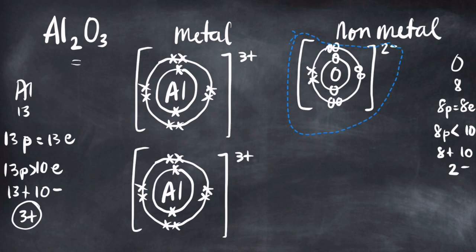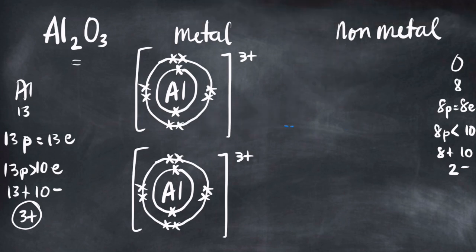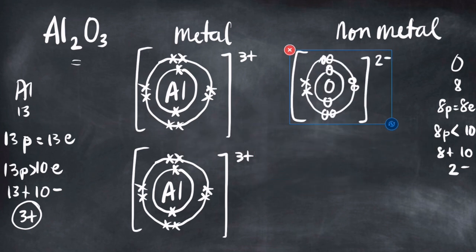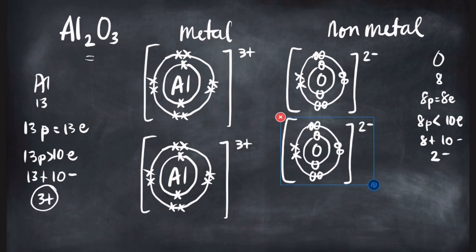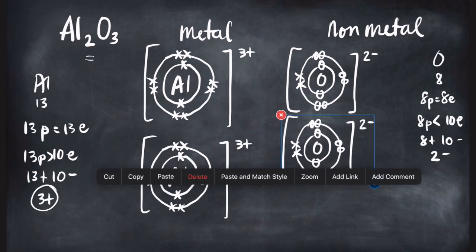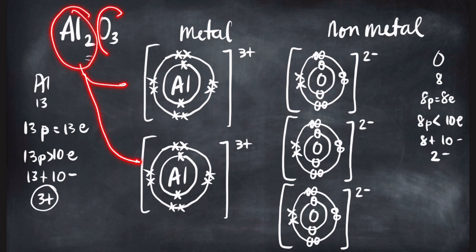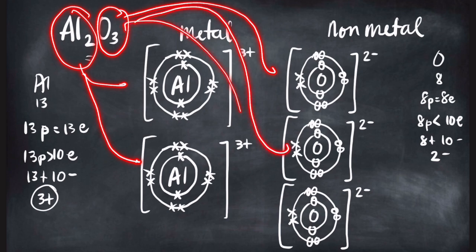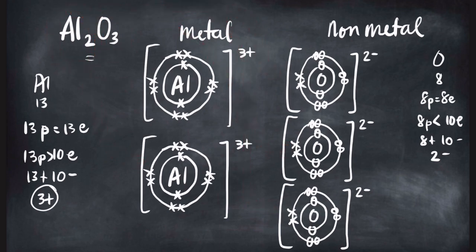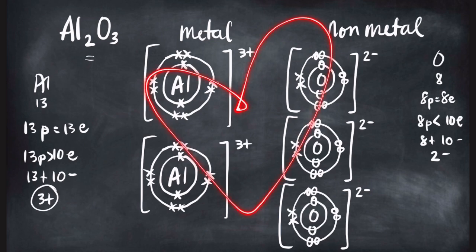Since we need three oxygen atoms in Al₂O₃, you need to draw three of them. I'll copy and paste to save time — three oxygen atoms stacked on top of each other. That's how you show the dot-cross diagram for Al₂O₃. I hope this helps. Good luck — chemistry is fantastic! Bye bye.